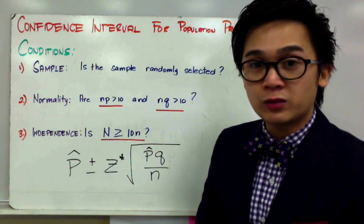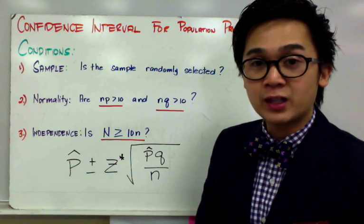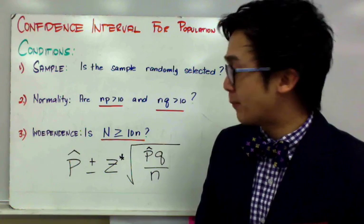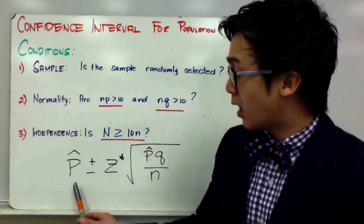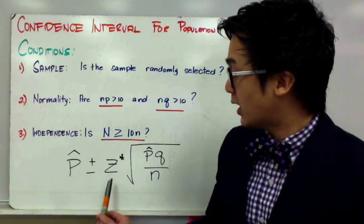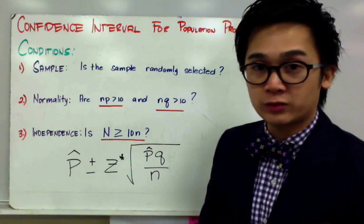If we satisfy the conditions, we're ready to use the formula in finding the interval of our population parameter. Our formula will be P hat plus or minus Z star times the square root of PQ all over N.